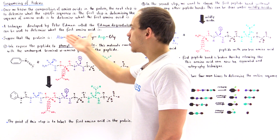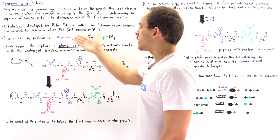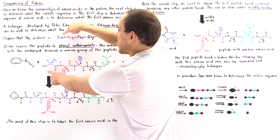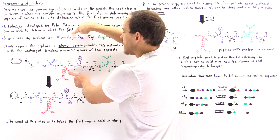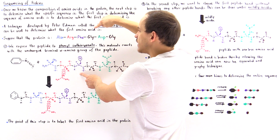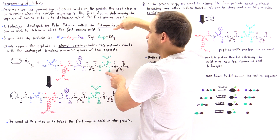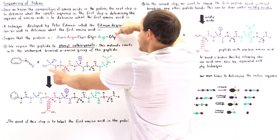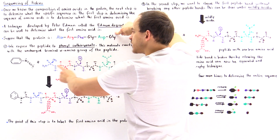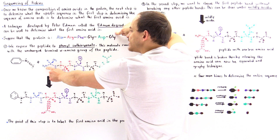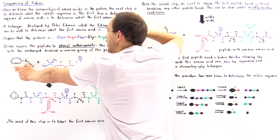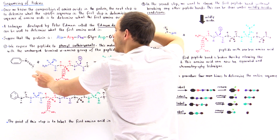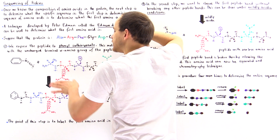If we draw the structure of our six amino acid polypeptide, we have alanine, arginine, phenylalanine, glycine, aspartate, and glycine — this is the beginning and this is our end. If this nitrogen is not charged, then the phenyl isothiocyanate will react with it and bind to it, labeling it.